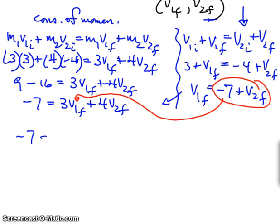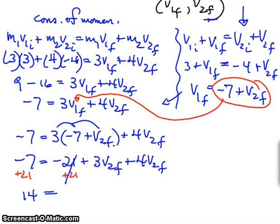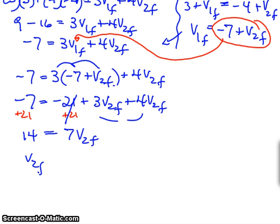So let's do that. I get minus 7 equals 3 times minus 7 plus V2 final plus 4 V2 final. Always a good idea to put things in parentheses first. That's going to be minus 21 plus 3 V2 final plus 4 V2 final. I'm going to add 21 to both sides. So I get 14 over here, these cancel out, and I get 7 V2 final.